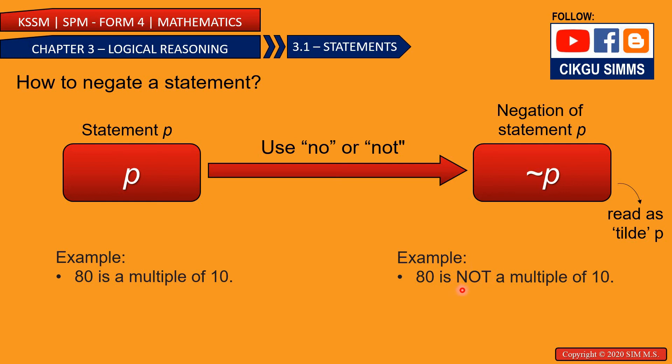You see, this is the word not. Another example: all factors of 10 are prime numbers. So the negation of this statement would be, not all factors of 10 are prime numbers.